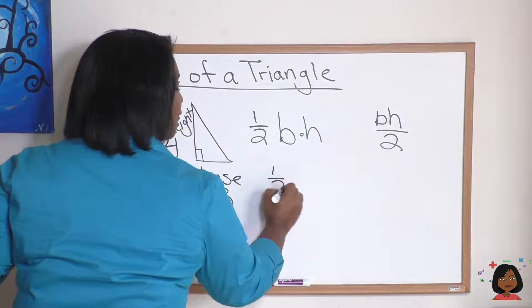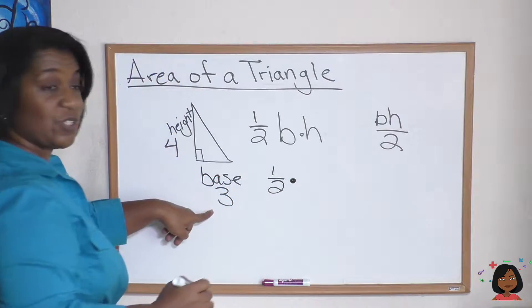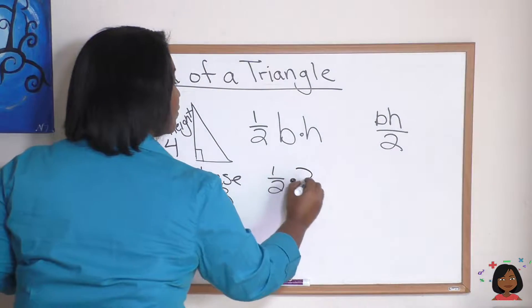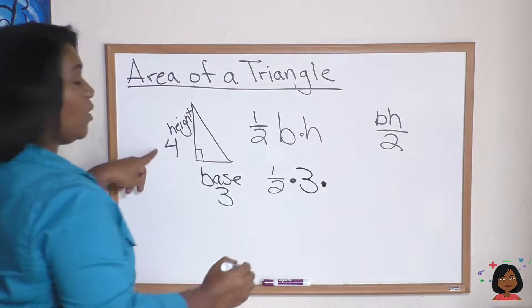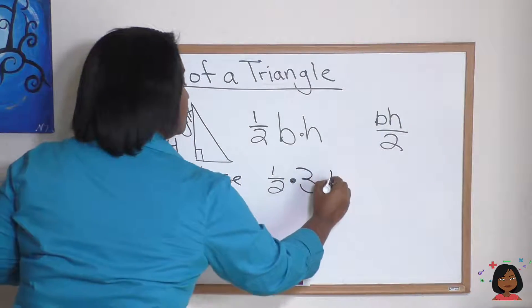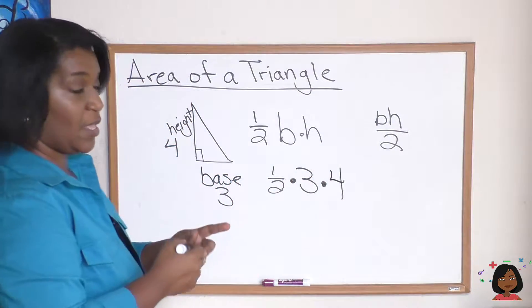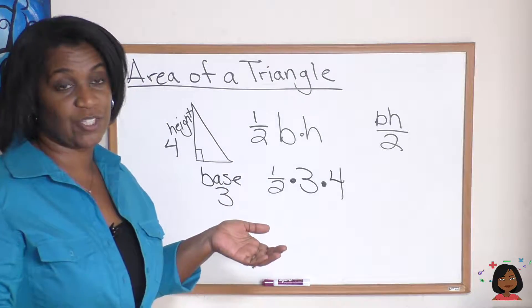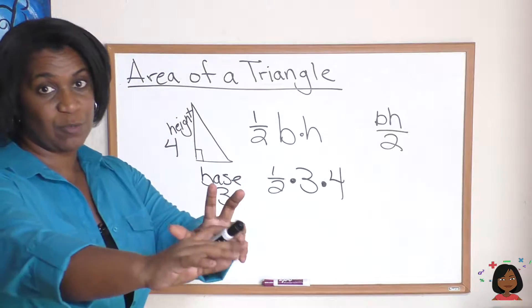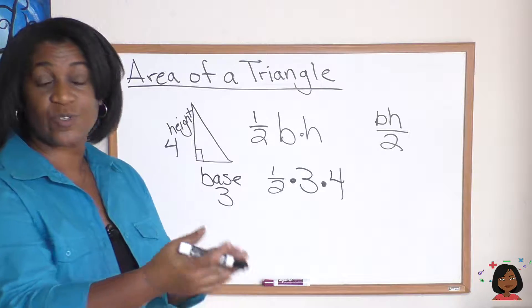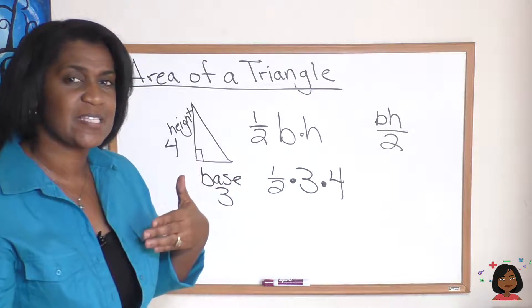Well, let's follow the formula: one half times my base, which is three, times my height, which is four. And remember, when we're doing multiplication with a fraction, you multiply the numerators and multiply the denominators, or you could always simplify ahead of time.